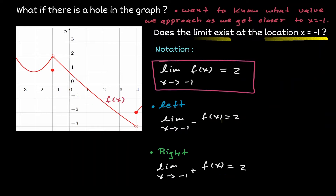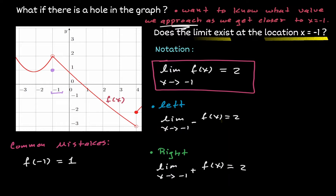Let's clarify a common mistake. You might notice that when x equals negative 1, the function has a closed circle at y equals 1, so evaluating the function there gives y equals 1. However, under limits we are not concerned about what's happening exactly at negative 1. What we want to know is what y value we are approaching as we get closer to negative 1 from the left and from the right — and that value is 2.